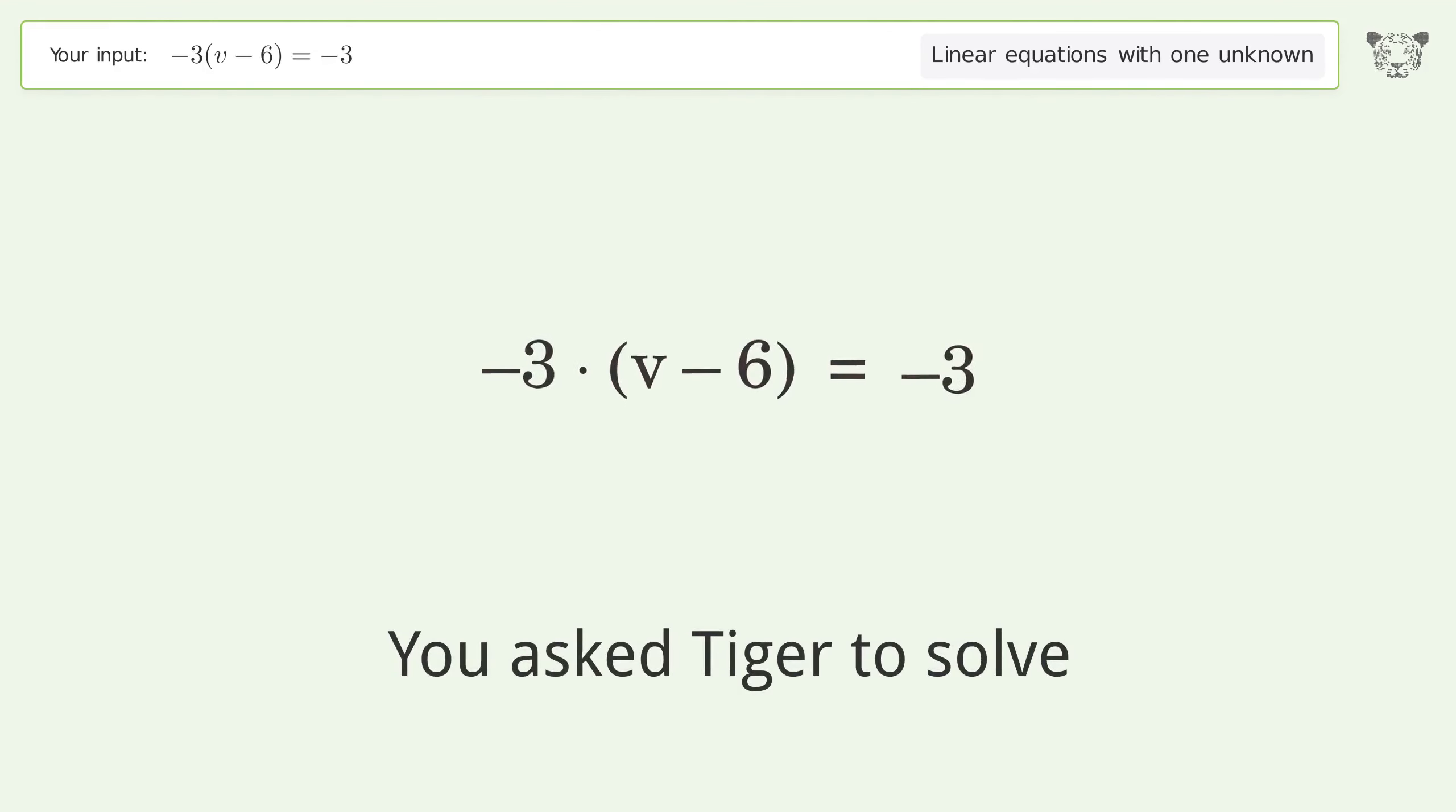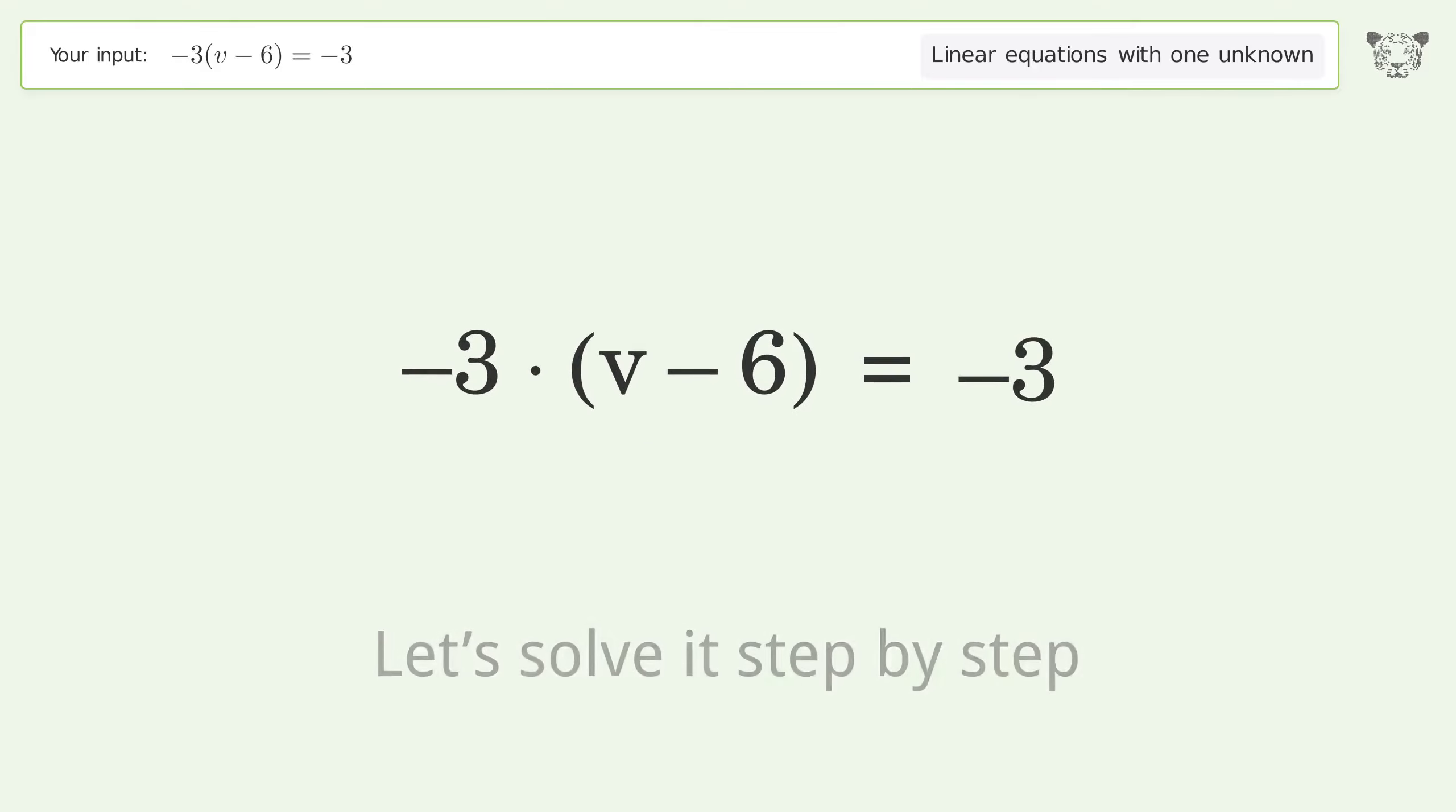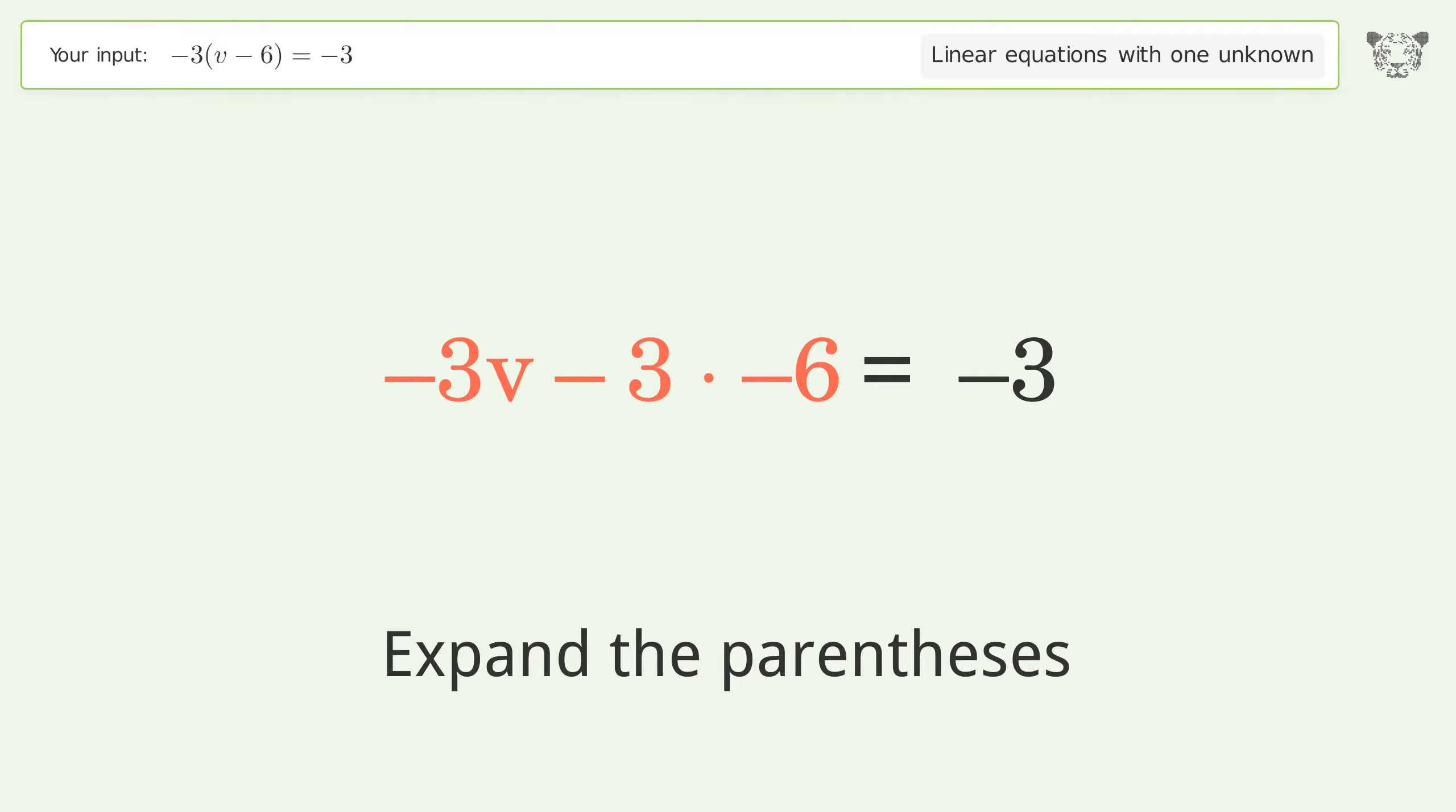You asked Tiger to solve this. It deals with linear equations with one unknown. The final result is v equals 7. Let's solve it step by step. Simplify the expression, expand the parentheses, simplify the arithmetic.